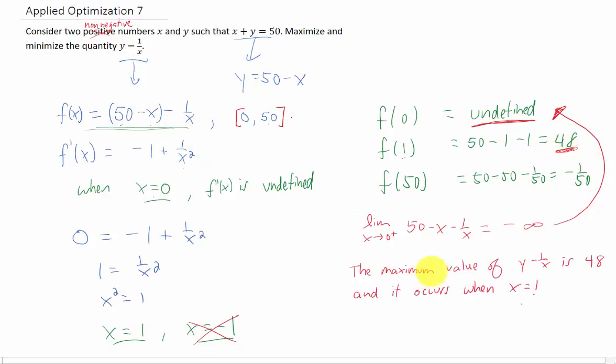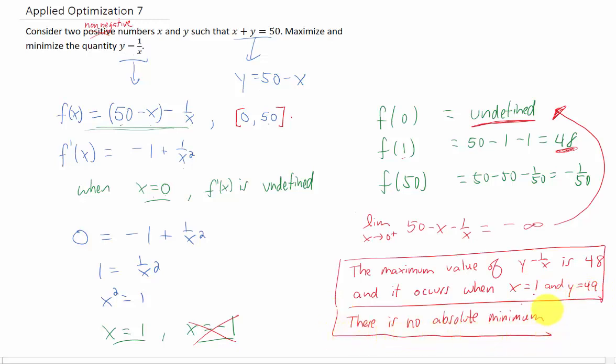And to summarize, we have a maximum value of our function, and it's 48. That maximum value occurs when x equals 1, and then that would correspond to a y value of 49. Because, of course, x and y have to add up to 50. And, of course, we should make the note that there is no absolute minimum of this function on this interval, because the function goes to negative infinity. Okay, I think that does it.